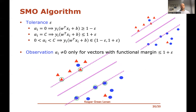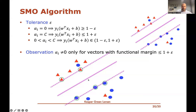Based on these conditions, the alpha_i's will be non-zero only for vectors whose functional margin is no more than one plus epsilon. This means only the training examples that are close to the margin — not exactly on it, but kind of close or slightly inside or outside the margin toward the center — will end up with non-zero coefficients. These are the support vectors: the training examples close to the separating hyperplane that you end up using.